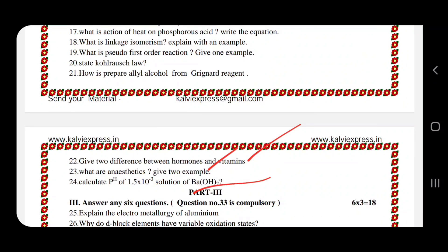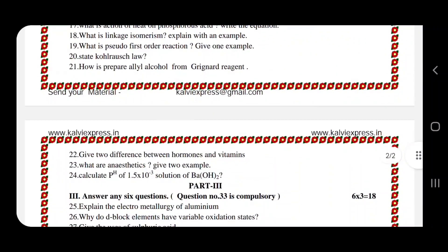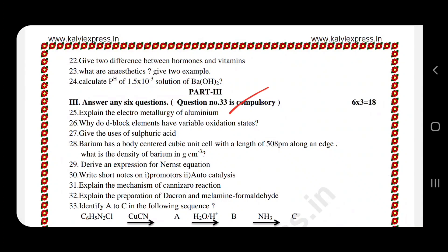Anesthetics, give two examples, pH. Electrometallurgy of aluminum, d-block elements have variable oxidation state, very very important. Use of sulfuric acid.